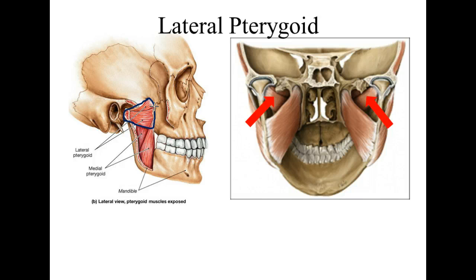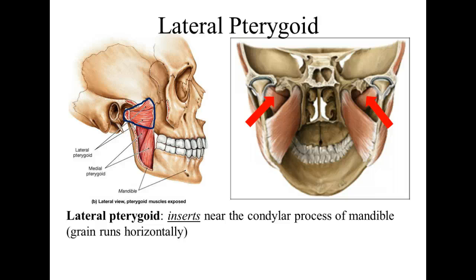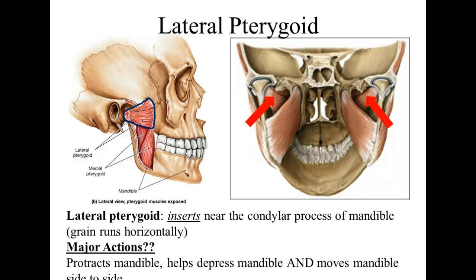So this is going to be the origin end and this is going to be the insertion end. A big action we get out of this is that the mandible goes forward — stick out the chin. The lateral pterygoid inserts near the condylar process, kind of on the neck of that condylar process, and there's also a part attaching to the joint capsule. So it's going to pull the mandible forward. It also helps to depress the mandible a little bit with the hinge action, and it helps move the mandible side to side.